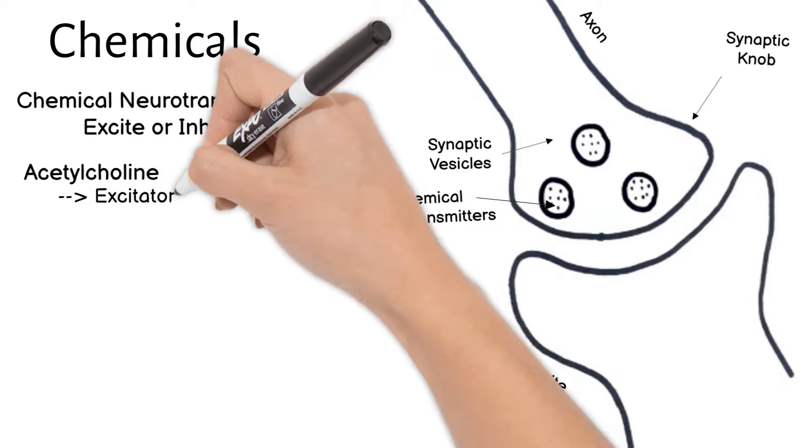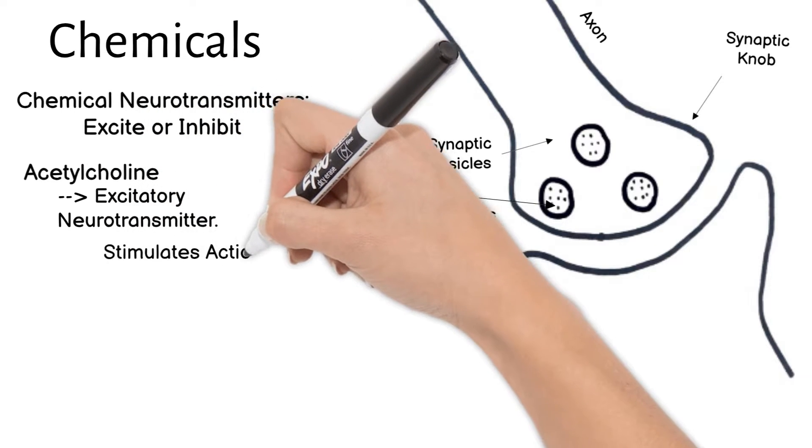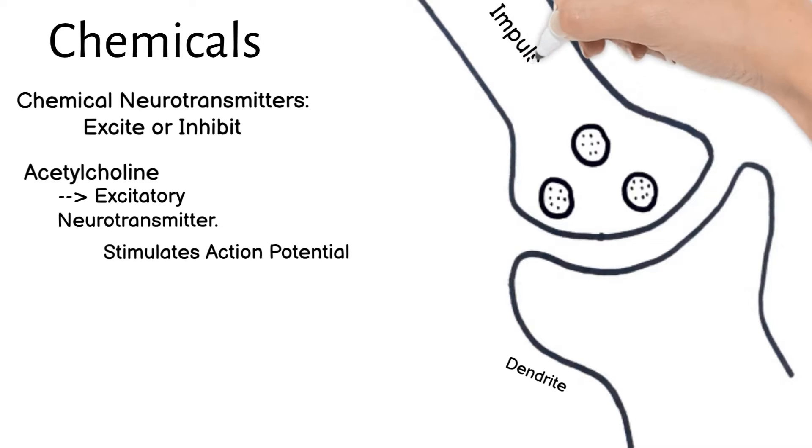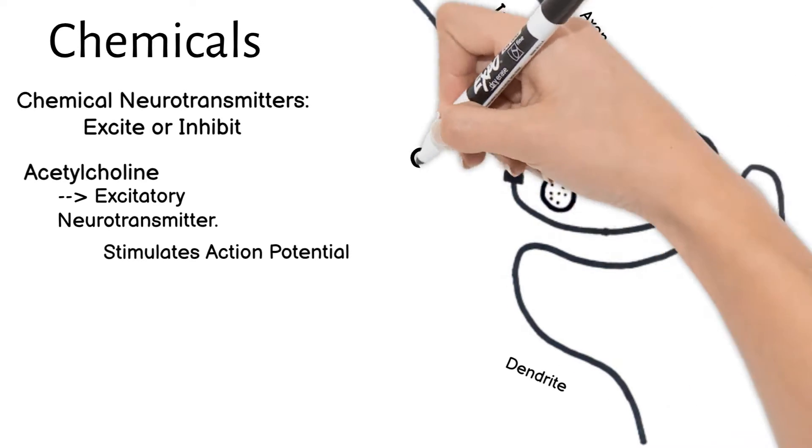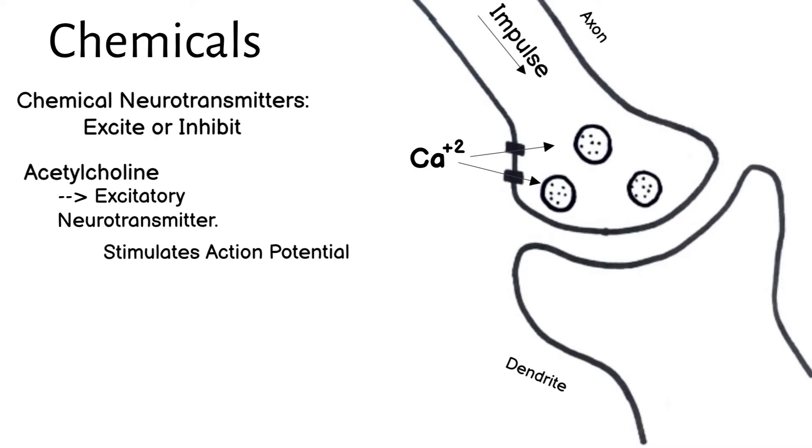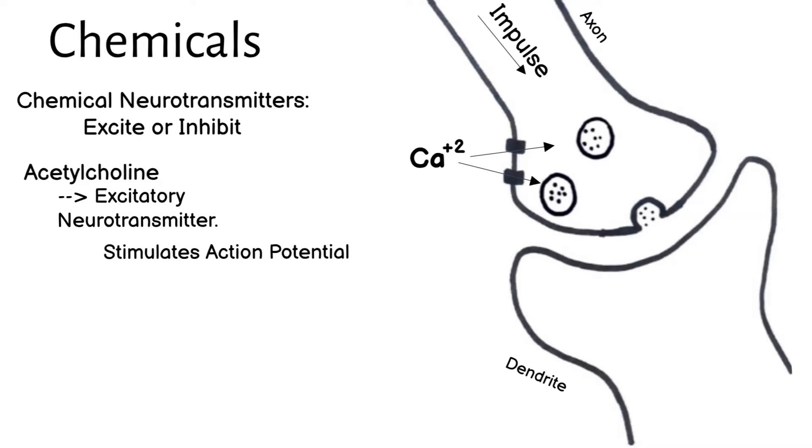Acetylcholine is an excitatory neurotransmitter, meaning it stimulates the next neuron to have an action potential. When an impulse gets to the synaptic knob, there are calcium ion channels that open. The calcium inside signals the synaptic vesicles to go to the membrane and release the neurotransmitter into the synapse.